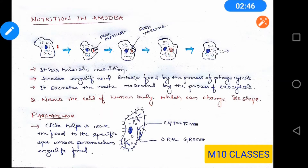Now students, there is a question for you. Name the cell of the human body which can change its shape. As you have already seen, amoeba is changing its shape. Like this, there is a cell in our body which can change its shape. The answer would be WBC — white blood cells can change their shape.